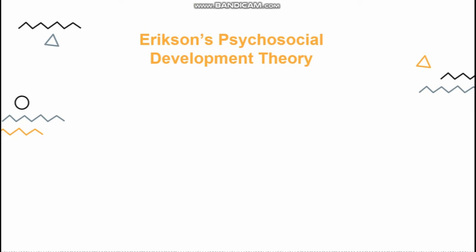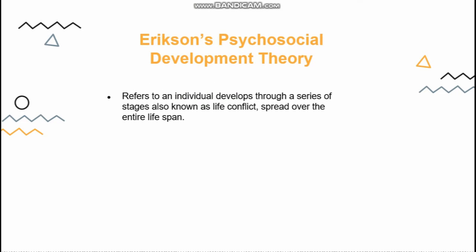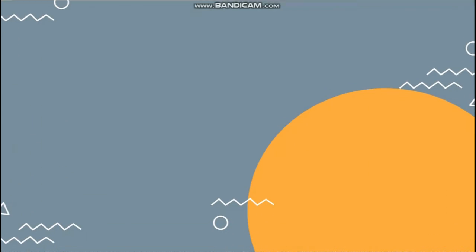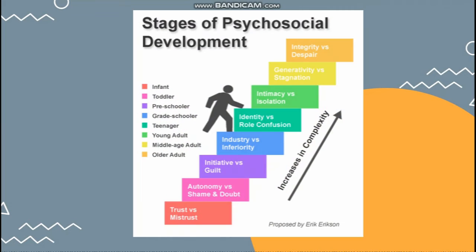Erikson's Psychosocial Development Theory refers to an individual developing through a series of stages, also known as life conflicts, spread over the entire lifespan. Erikson believes people experience a conflict that serves as a turning point in development. He also stated there are eight stages of psychosocial development.